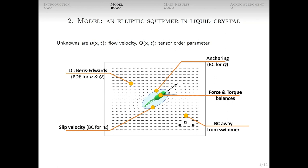To compute how the swimmer reorients, we need to consider the force and torque balances. The boundary conditions for Q determine how the liquid crystal is anchored by the surface of the swimmer. We also need boundary conditions away from the swimmer, for example, periodic boundary conditions.